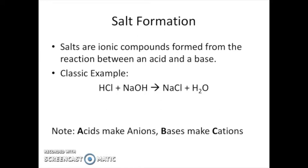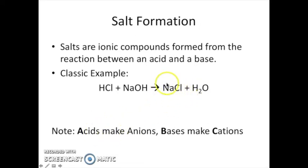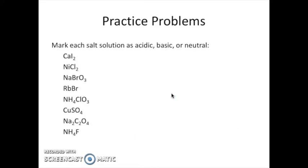The important thing to notice about the salt that's formed — the NaCl — is that it is made up of the conjugate base from the acid. HCl has contributed the Cl⁻ to NaCl, and the Na⁺ has come from the base, sodium hydroxide. So acids are going to make the anions and bases are going to make the cations. To determine the acidity or basicity of the salt, we look at those two parts individually and determine which one is going to influence the pH more.